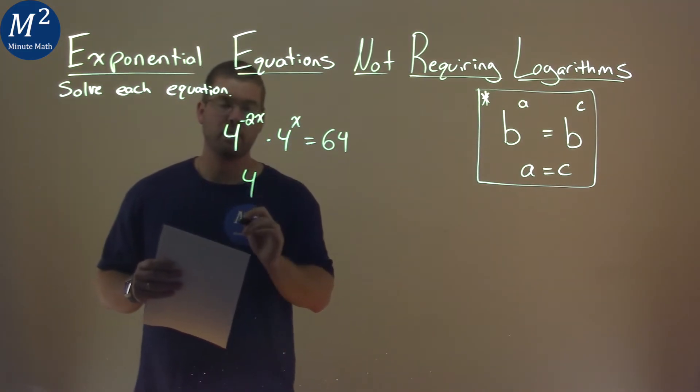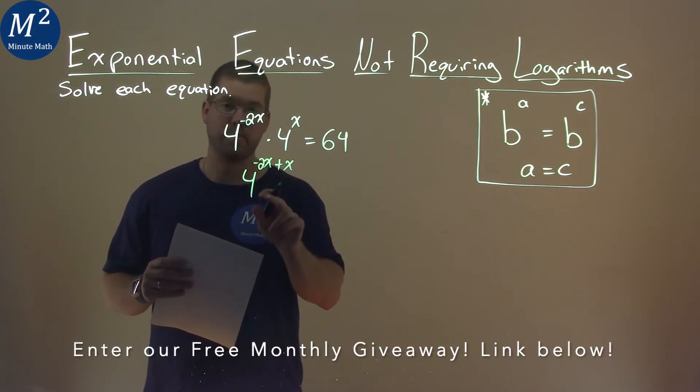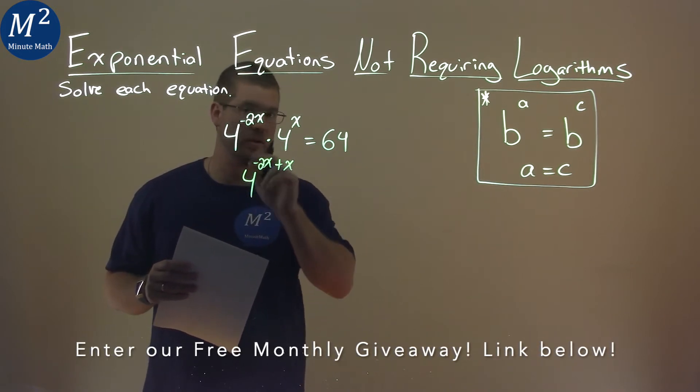With a base of 4, and we take the exponents, the negative 2x and the x, and we add them together. So we combine them to be one base, but we add the exponents when it's multiplication.